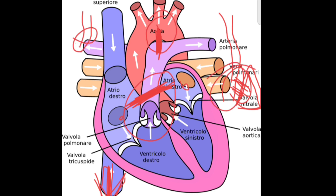Another change is that the umbilical cord gets separated, and the veins and arteries within it get closed. So in total we have five changes: first, the foramen ovale closes; second, the ductus arteriosus becomes the ligamentum arteriosum; third, the ductus venosus becomes the ligamentum venosum; and fourth, the umbilical cord is separated with its veins and arteries closing. These are the changes in the circulatory system after birth.